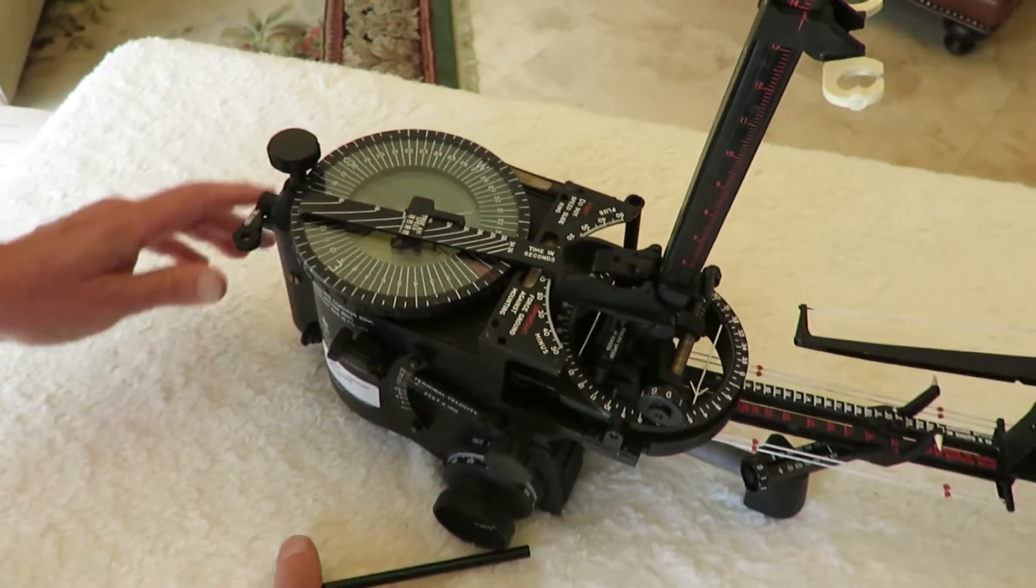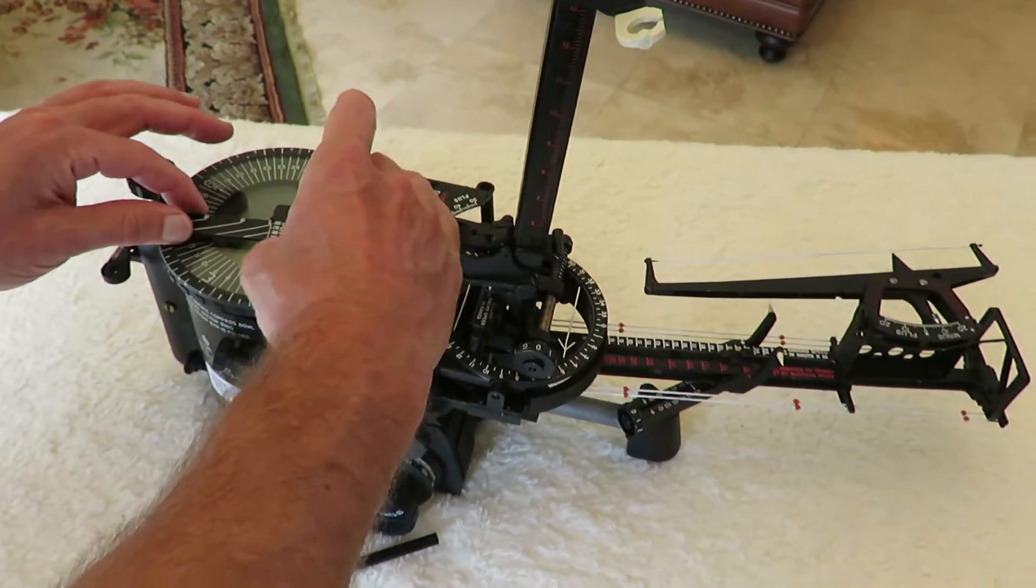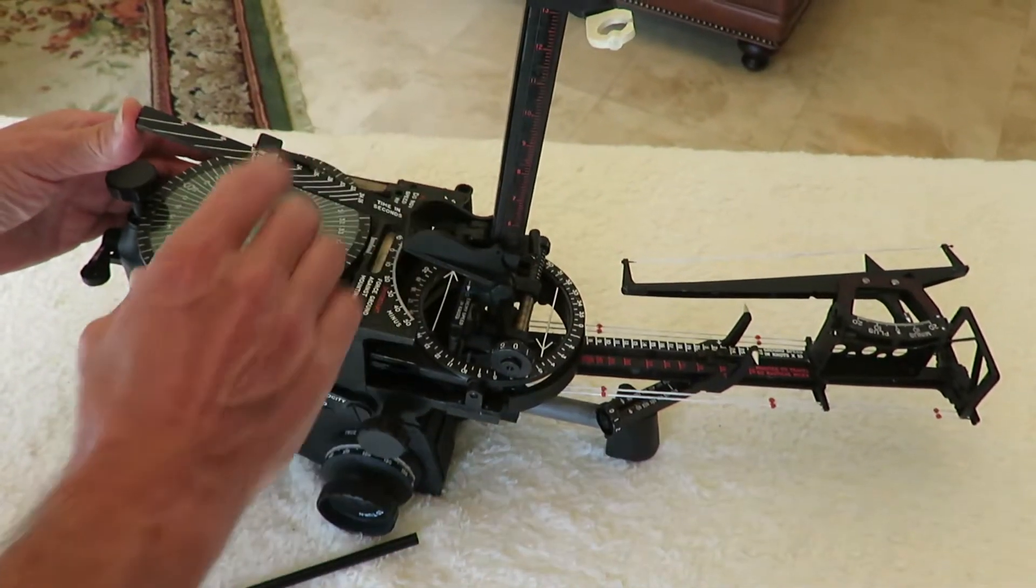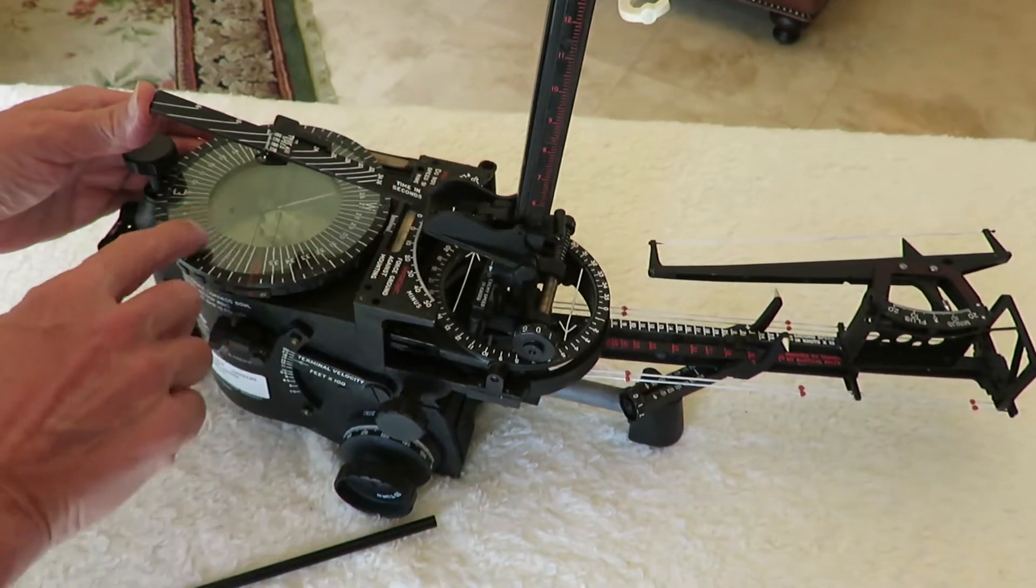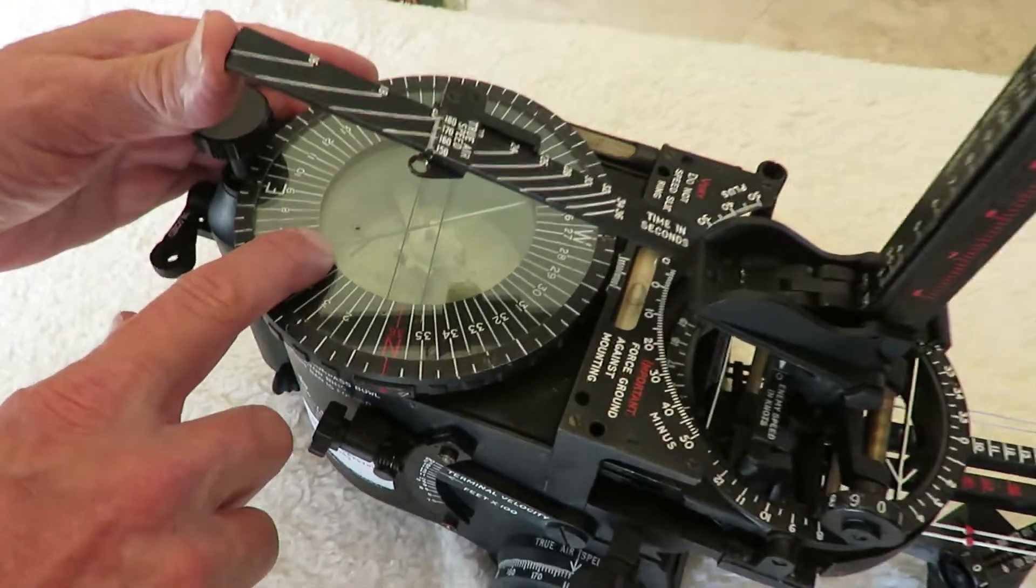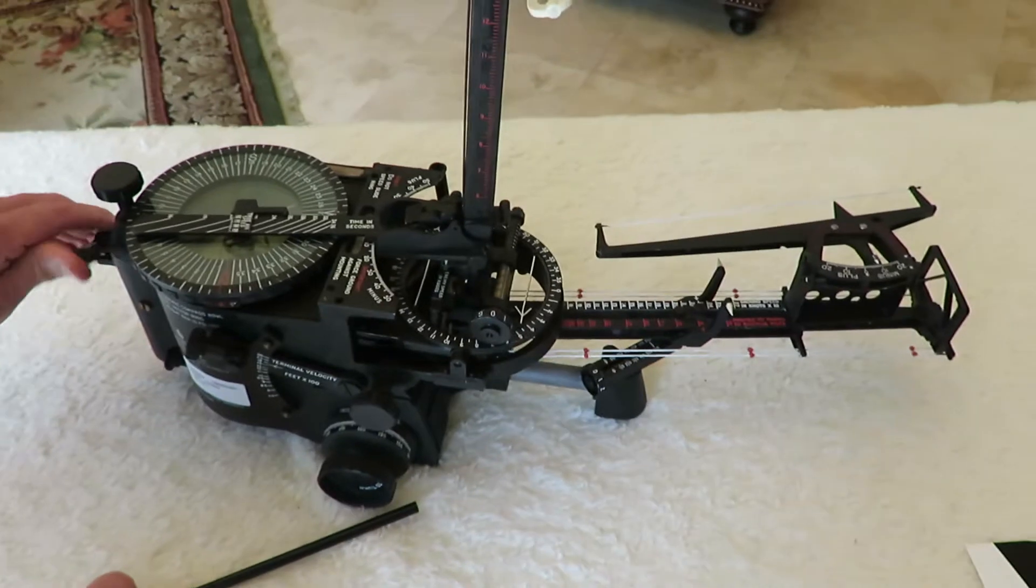We're then going to unlock the bearing plate, and we're going to rotate the bearing plate until that mark is over the tail of the wind arrow. And here's the mark over the tail of the wind arrow. We relock the bearing plate.